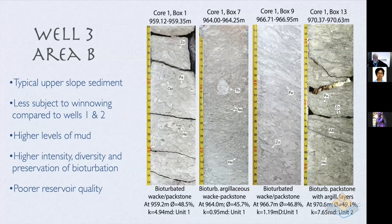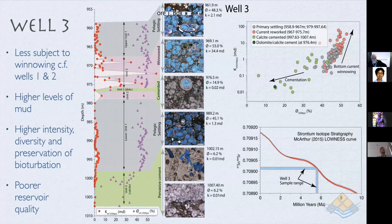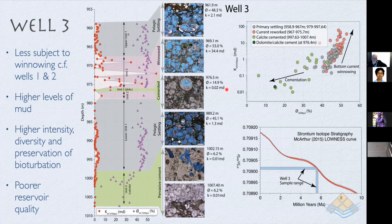There are preserved cemented bands in well three, including a dolomite-cemented band. The dolomitic micrite cements up the inter-particle positions and some intra-particle shell positions as well, reducing porosity to less than 15% and permeability to 0.02 millidarcies. The strontium 87/86 measurements from the MacArthur Lowness curve confirm that well three samples date to latest Miocene, not Pliocene.